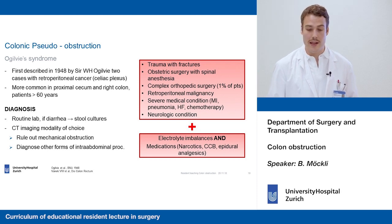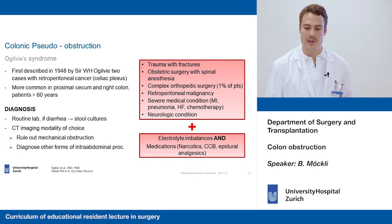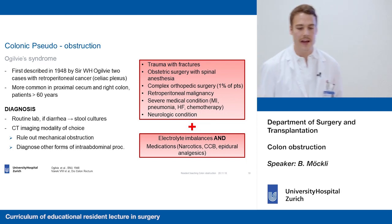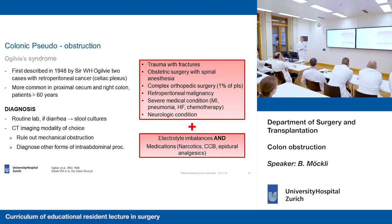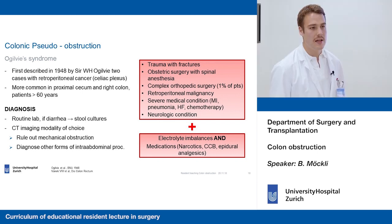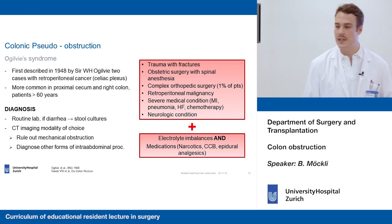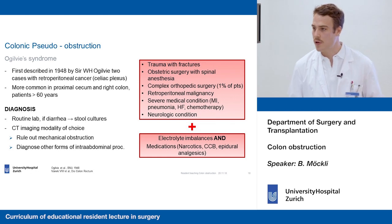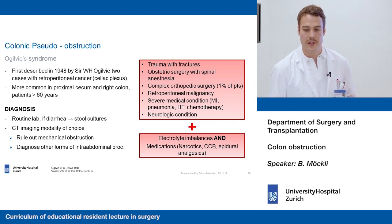These patients often present with trauma, fractures, obstetric trauma, or complex medical conditions such as MIs, pneumonias, or chemotherapy. Retroperitoneal malignancy, as first described by Ogilvie, can also be a cause. Electrolyte imbalances and narcotic medications or calcium channel blockers need to be considered as well. Diagnosis consists of routine labs; if diarrhea is present, stool cultures should be taken to rule out C. diff colitis. CT imaging is the modality of choice to rule out mechanical obstruction and diagnose other intra-abdominal processes like retroperitoneal malignancy.